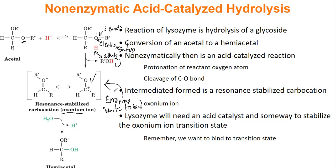Getting to this intermediate is the slowest step. When we look at our energy diagram, the intermediate transition state is at the top of our hill. So our enzyme is going to try to make that transition state as favorable as possible — that's what we'll be on the lookout for when we look at this mechanism.